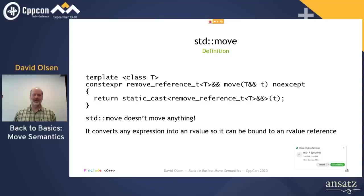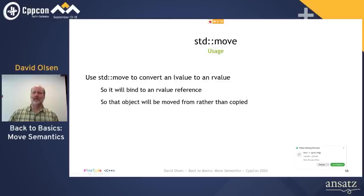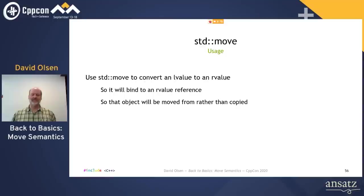std::move returns an R-value reference. I know I said never to do that just a few slides back, but it works here because std::move is returning a reference to its argument, not to a temporary defined within the function. All the function does is to static_cast the argument to its corresponding R-value reference type. So std::move is just a more convenient syntax for doing a particular static_cast. That means std::move doesn't actually move anything — it converts any expression into an R-value so it can be bound to an R-value reference. The reason you'd want to convert something to an R-value is so that the move constructor, move assignment operator, or other move-aware function will be called instead of the copy constructor or copy assignment operator.